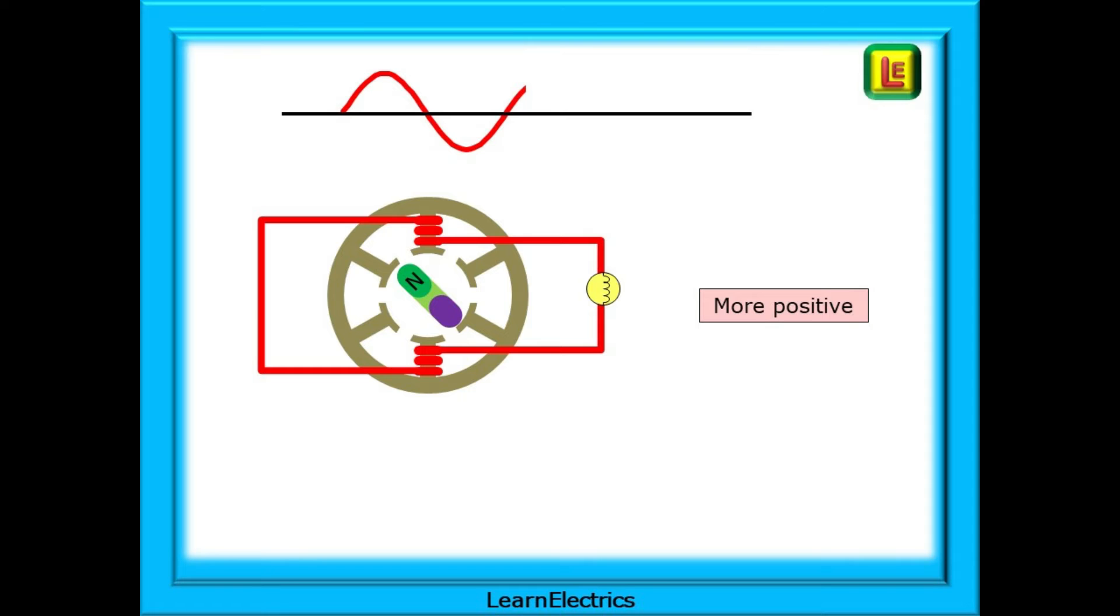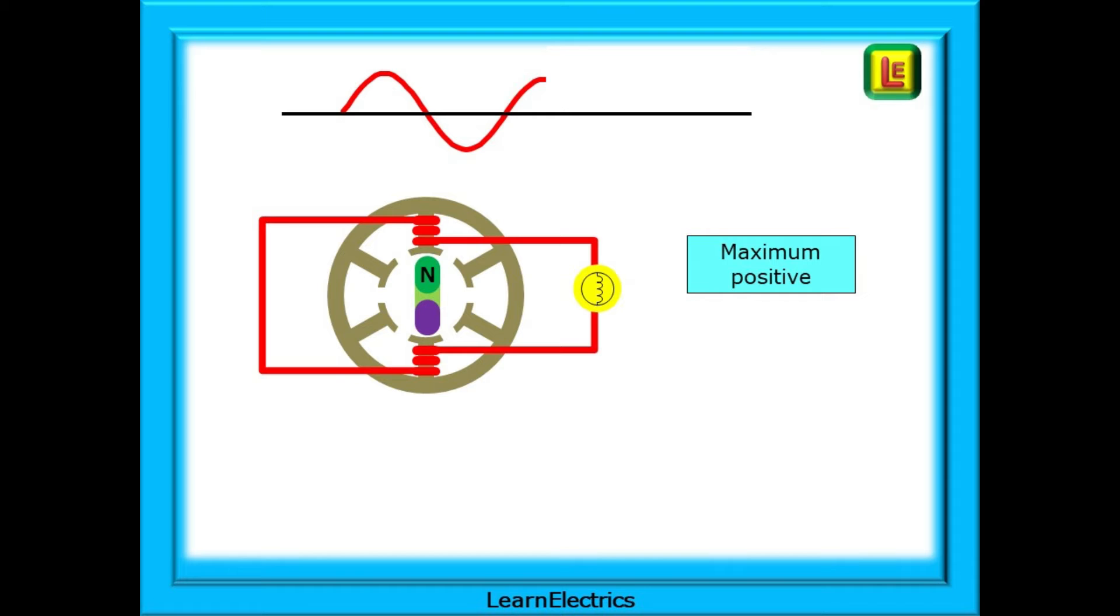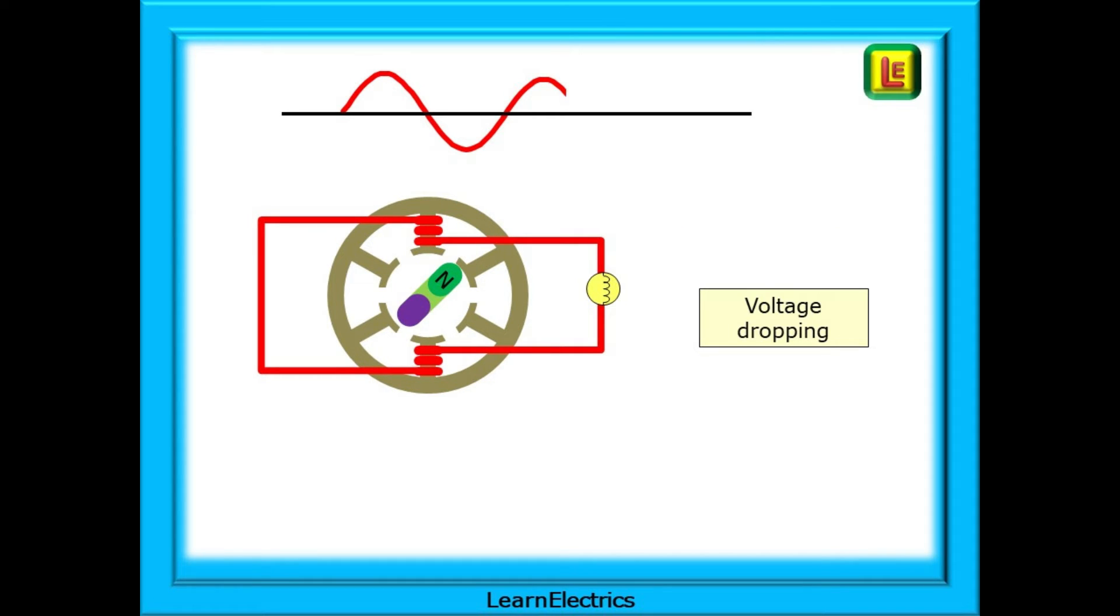The voltage begins to grow in a more positive direction as the rotor rotates. It reaches a maximum positive value and the lamp is at its brightest. The rotor rotates further and the voltage begins to drop again. At the midway point, the voltage crosses the zero line. Now it's going in a negative direction. Look at the waveform at the top. It reaches a maximum in the negative direction and starts to fall back towards zero volts. The rotor reaches the midpoint and the voltage crosses the zero line for the whole cycle to start again.